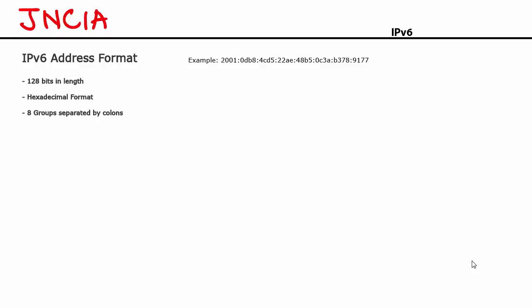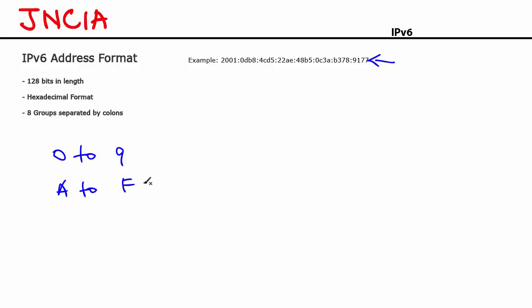IPv6 address format. The IPv6 address format looks like this. IPv4 was in decimal format while IPv6 is in hexadecimal format, which means you'll have characters ranging from 0 to 9 and A to F. The letter A represents the decimal value 10 and the letter F represents the decimal value 15. So 0 to 15 is the range of hexadecimal format.